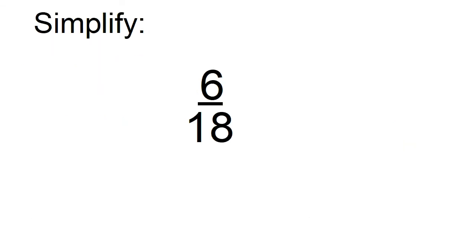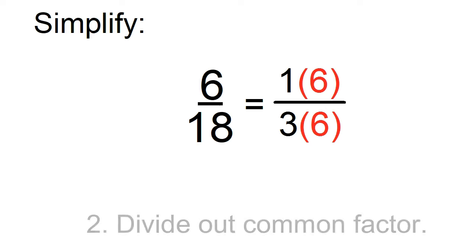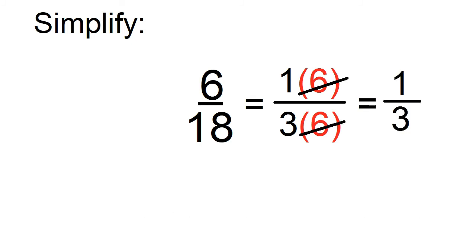Example: simplify 6 over 18. First, factor the numerator and the denominator. 6 can be factored as 1 times 6, and 18 can be factored as 3 times 6. Then divide out common factors. 6 divided by 6 is 1. 1 times 1 over 3 is 1 third.